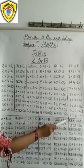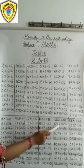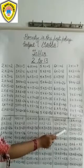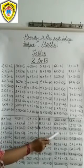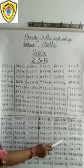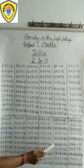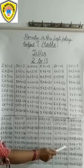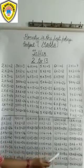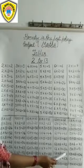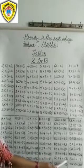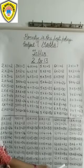12 1s are 12. 12 2s are 24. 12 3s are 36. 12 4s are 48. 12 5s are 60. 12 6s are 72. 12 7s are 84. 12 8s are 96. 12 9s are 108. 12 10s are 120.